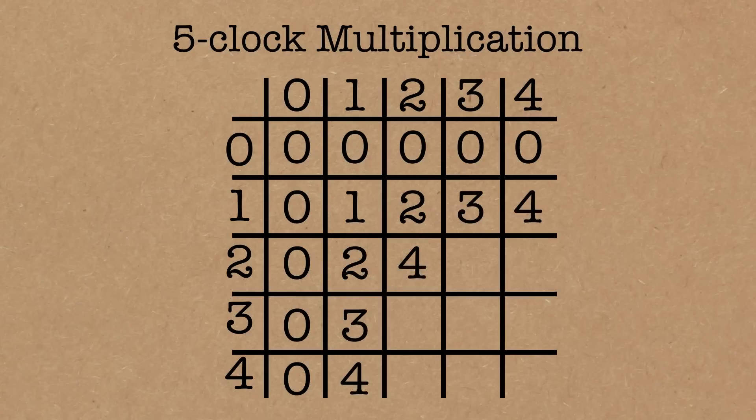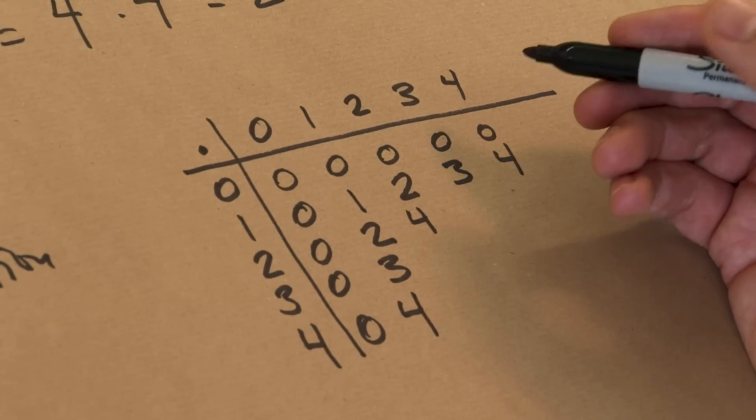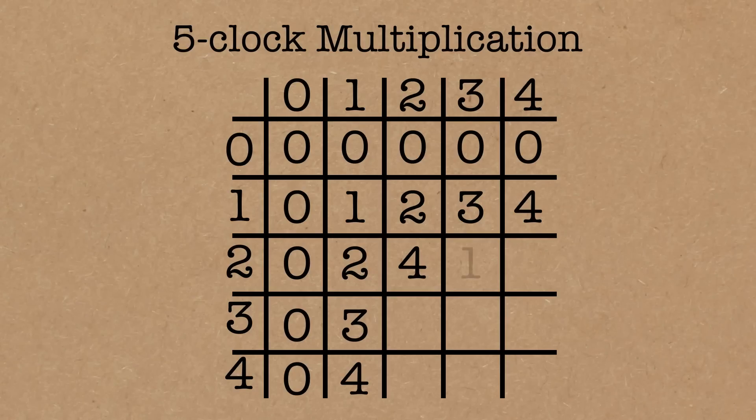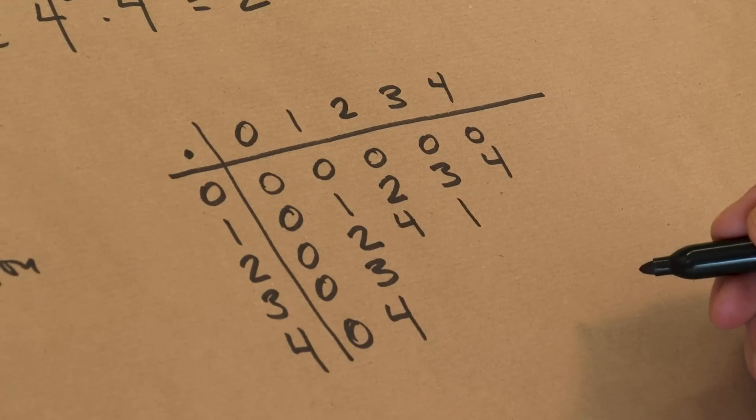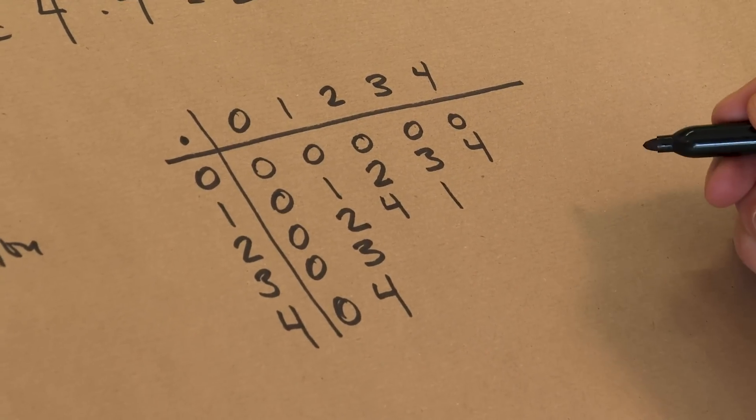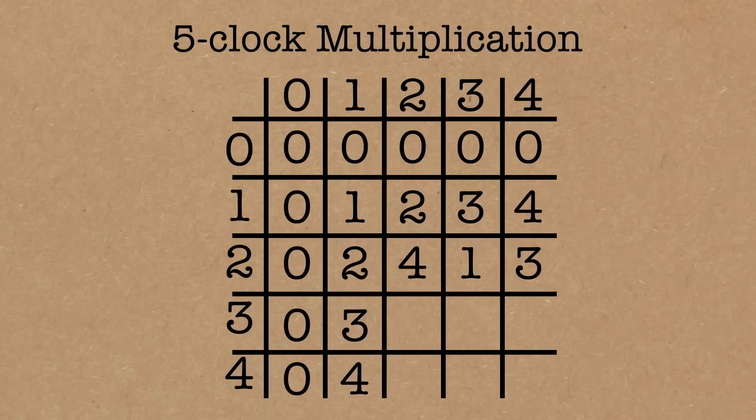2 times 2 gives me 4, 2 times 3 is 6, 6 on the 5 clock is 1. 2 times 4 is 8 on the 5 clock, 8 is the same thing as 3, and I could keep going. 3 times 2 is 6 again, which is 1, 3 times 3 is 9, which is 4, 3 times 4 is 12, which is 2.